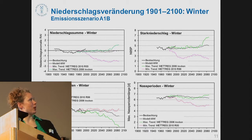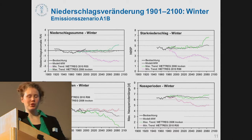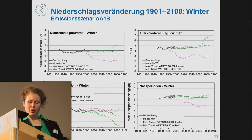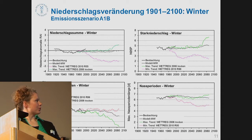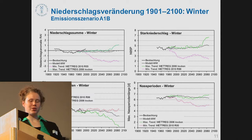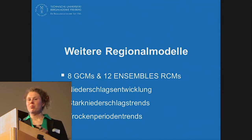Despite stable precipitation development, heavy precipitation in winter shows a slight increase. The dry periods stay the same and will stay the same, only decreasing at the end of the 21st century — influenced by the statistical models. For wet periods, we cannot really make a projection; almost no changes are seen, and statistically the slight increase observed in the past is not significant.